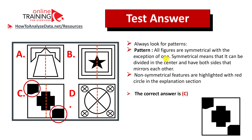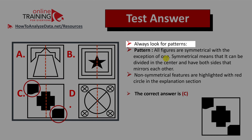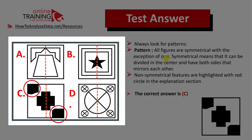My advice to you: always look for patterns. In this particular case, the pattern is that all figures are symmetrical. If you draw a line from top to the bottom of figure A, B, and D, you see that those figures are symmetrical, because the left side of the figure is equivalent to the right side of the figure.